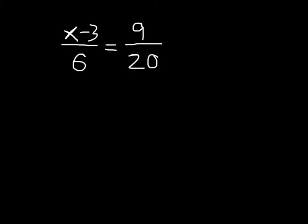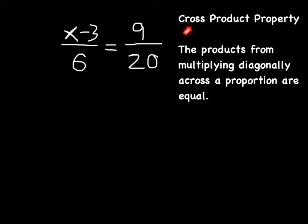And what I could suggest here is that we remember the cross product property. Our cross product property says the products, when multiplying diagonally, so multiplying this way and this way, are going to be equal to one another. So let's go ahead and take the cross products and set them equal.